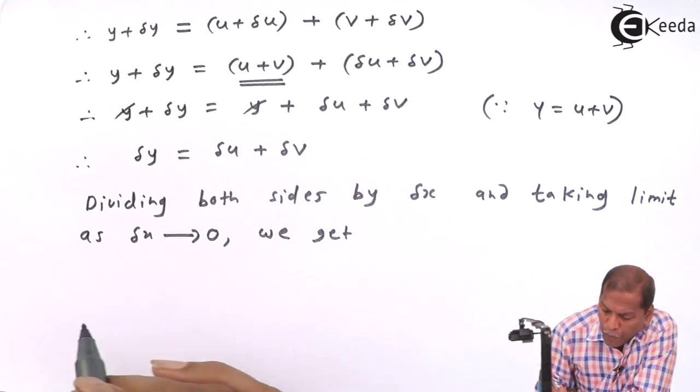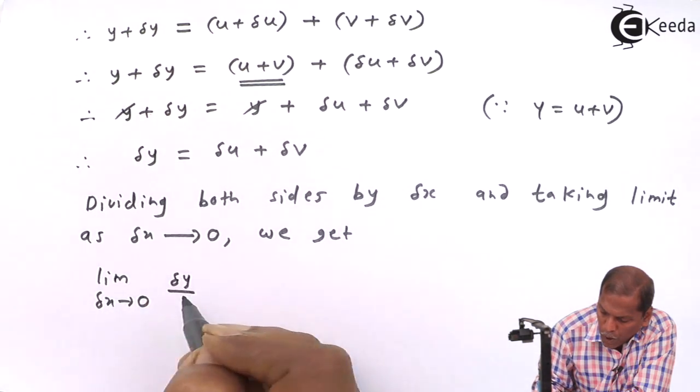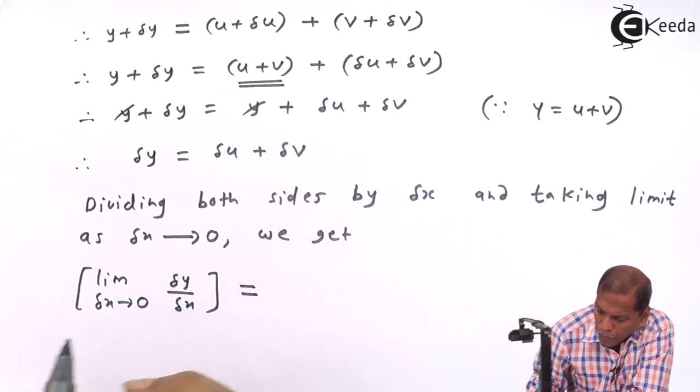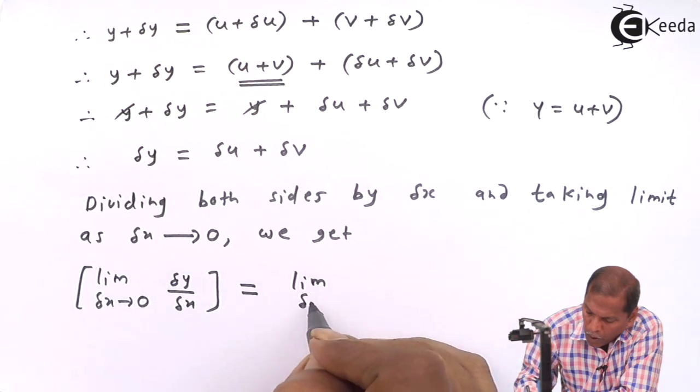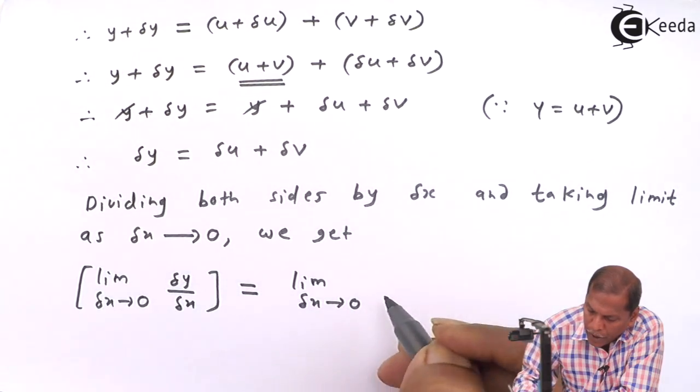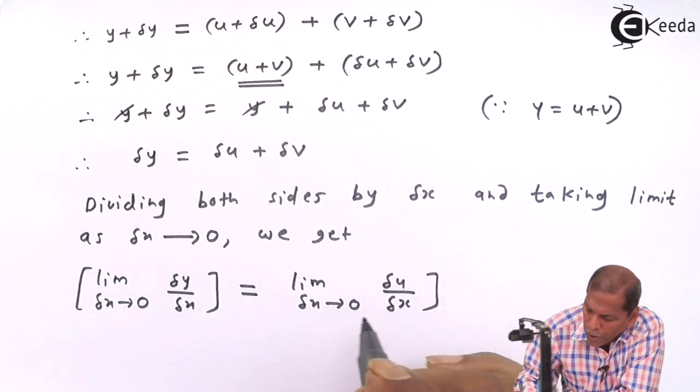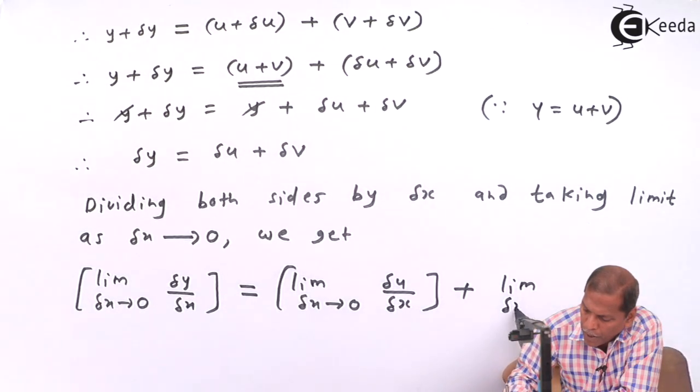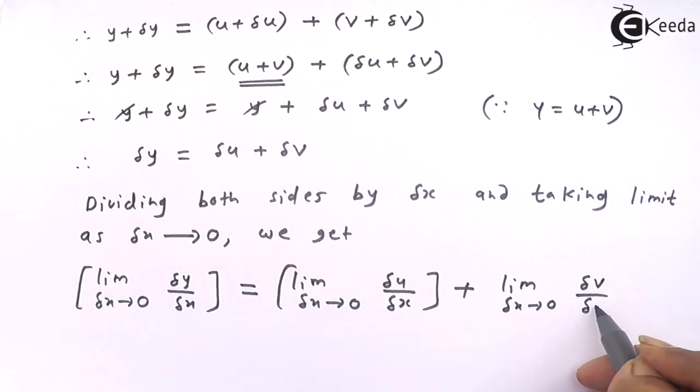So the next step will be: lim(Δx→0) Δy/Δx = lim(Δx→0) Δu/Δx + lim(Δx→0) Δv/Δx.